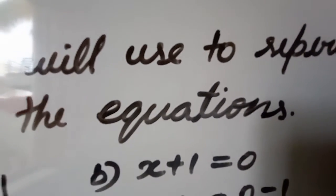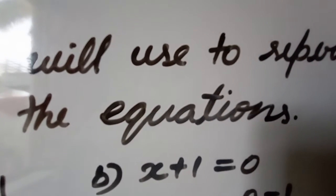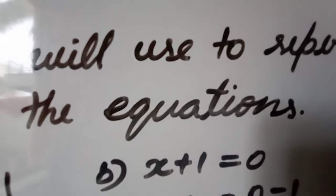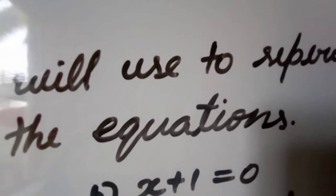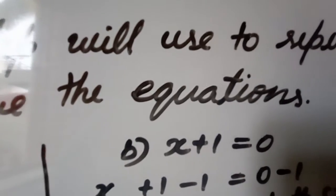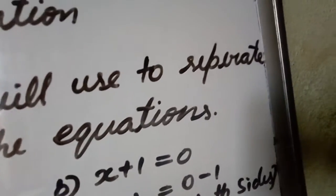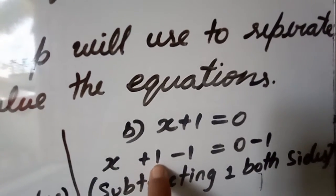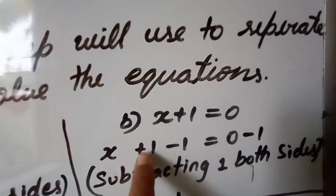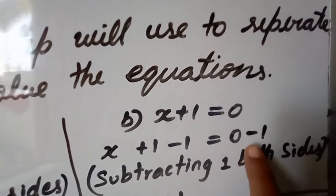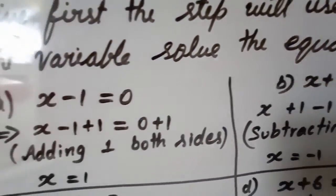Question B: x plus 1 is equal to 0. Here plus 1 is there, so if we subtract 1 from both sides, the 1 will cancel out. Subtracting 1 from both sides: x plus 1 minus 1 equals 0 minus 1. Plus 1 minus 1 becomes 0, leaving only x. On the right side, 0 minus 1 gives minus 1. So x is equal to minus 1.